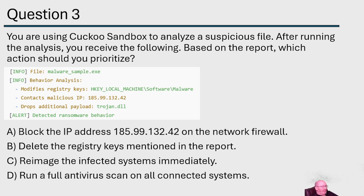It really comes between A and C. Do we block the IP address first or re-image the infected systems first? People who work in the field would probably block the IP first — but what does the book say? By the book, C — re-image the infected systems immediately — is the right answer. We need to fix the issue first. In the real world we'd probably block the IP, but for the exam, C is correct.